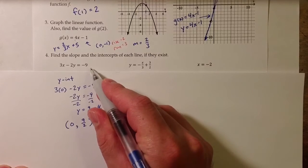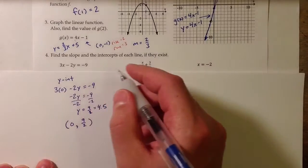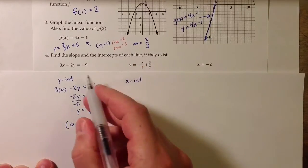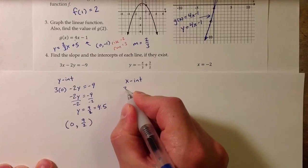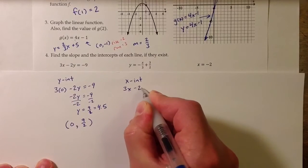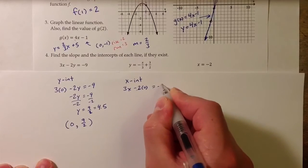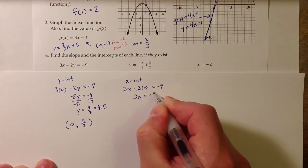Working with this same line, if I plug in 0 for y, I'll be able to find the x-intercept. Doing that, I get 3x minus 2 times 0, so that term disappears, equals negative 9, so 3x equals negative 9.